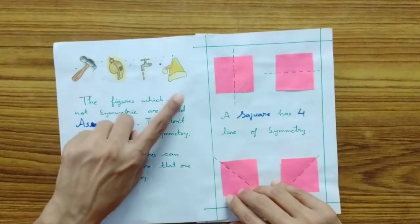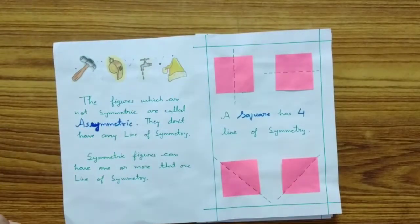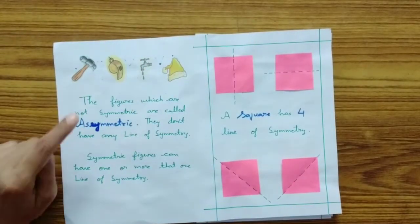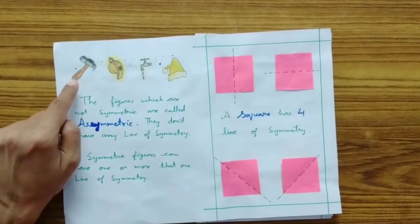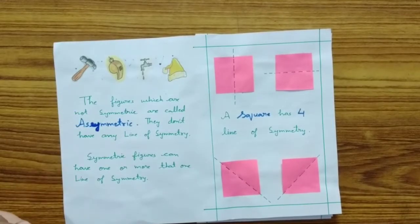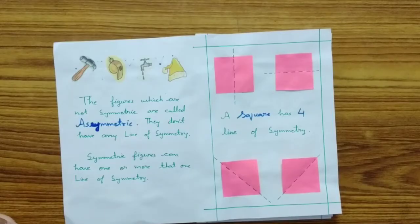We cannot find any line about which these figures can be folded to match both the halves. So these figures are not symmetric — they are called asymmetric figures and they don't have any line of symmetry.